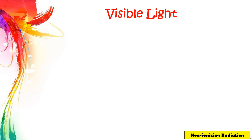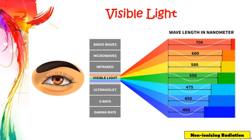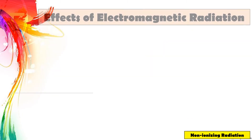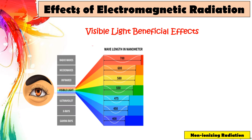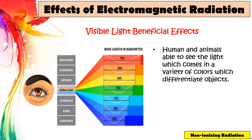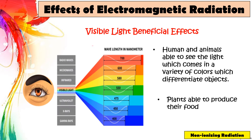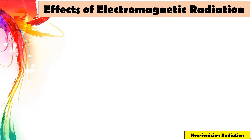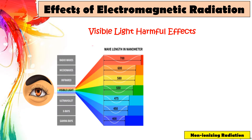The visible light can be seen by the human eye. This type of radiation consists of seven colors: red, orange, yellow, green, blue, indigo, and violet. When all the colors are present, it appears white. The beneficial effects of visible light include humans and animals being able to see a variety of colors which differentiate objects, and plants being able to produce their food. The harmful effects of visible light are ocular damage and skin diseases.